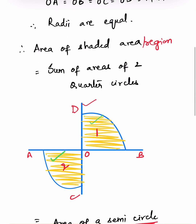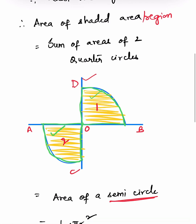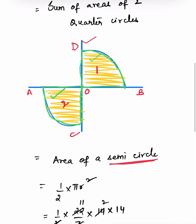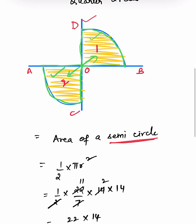The area of the shaded region is equal to the sum of the areas of two quarter circles. One quarter circle plus one quarter circle equals one semi-circle, so we can imagine this entire area to be one semi-circle. These two together make a semi-circle.